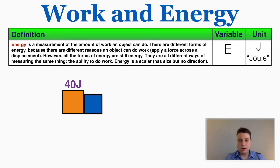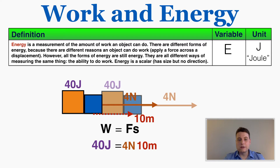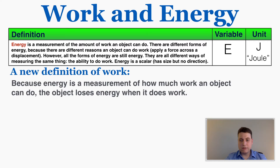If the orange box puts 4 newtons on the blue box, it could push it 10 meters, because 4 times 10 equals 40 — so it would be doing 40 joules of work. This also gives us a new definition of work: because energy is a measurement of how much work an object can do, the object loses energy when it does work.